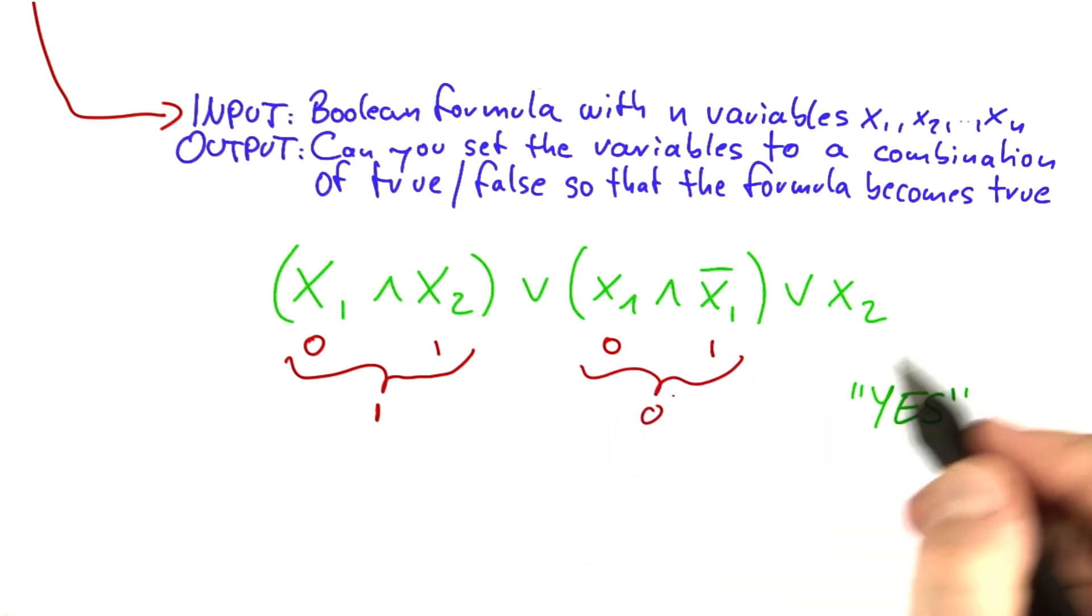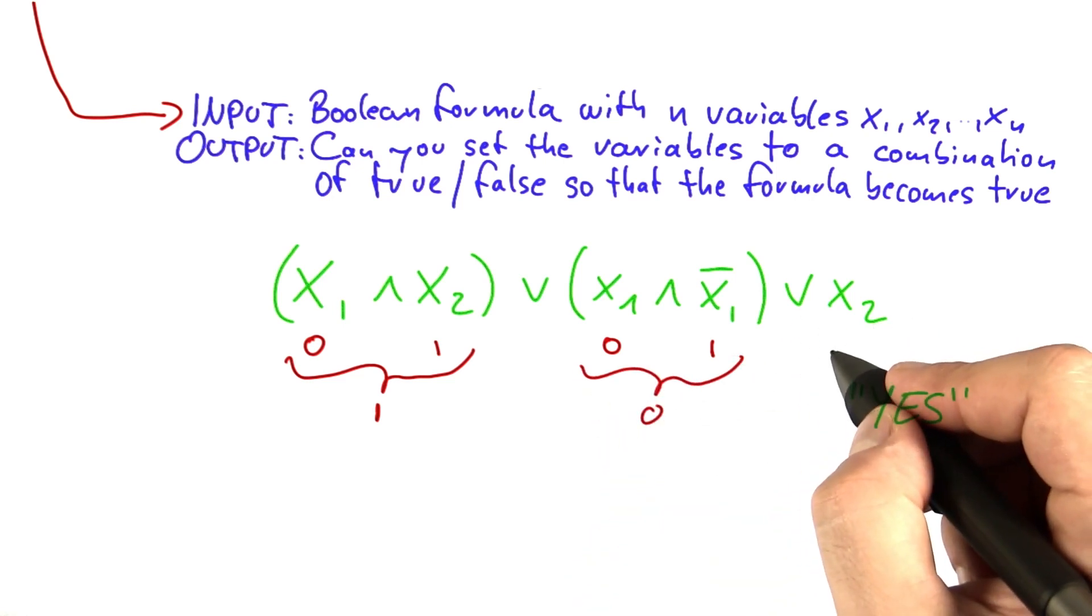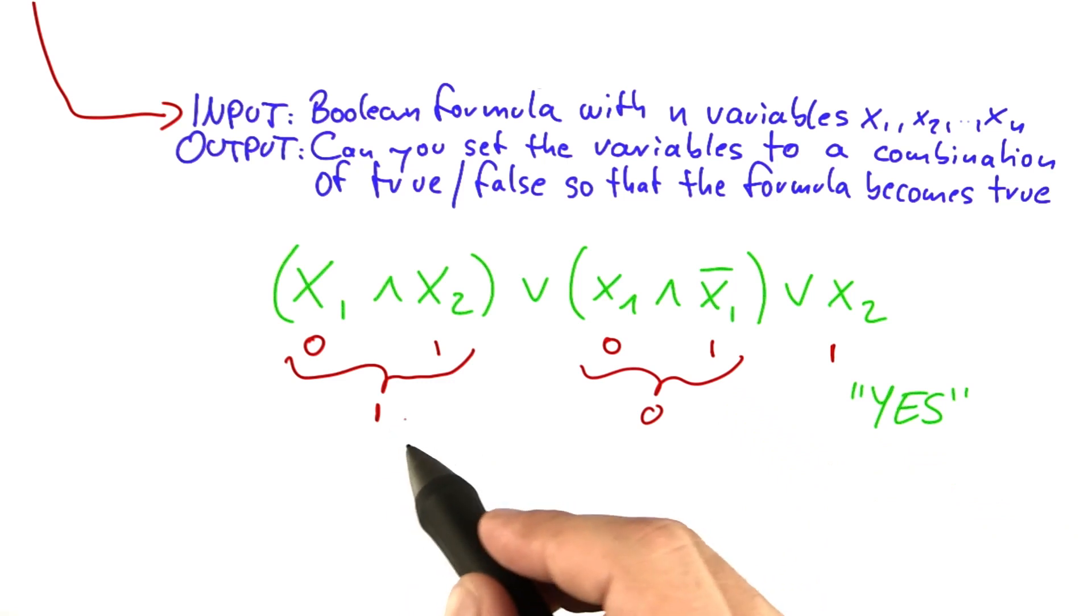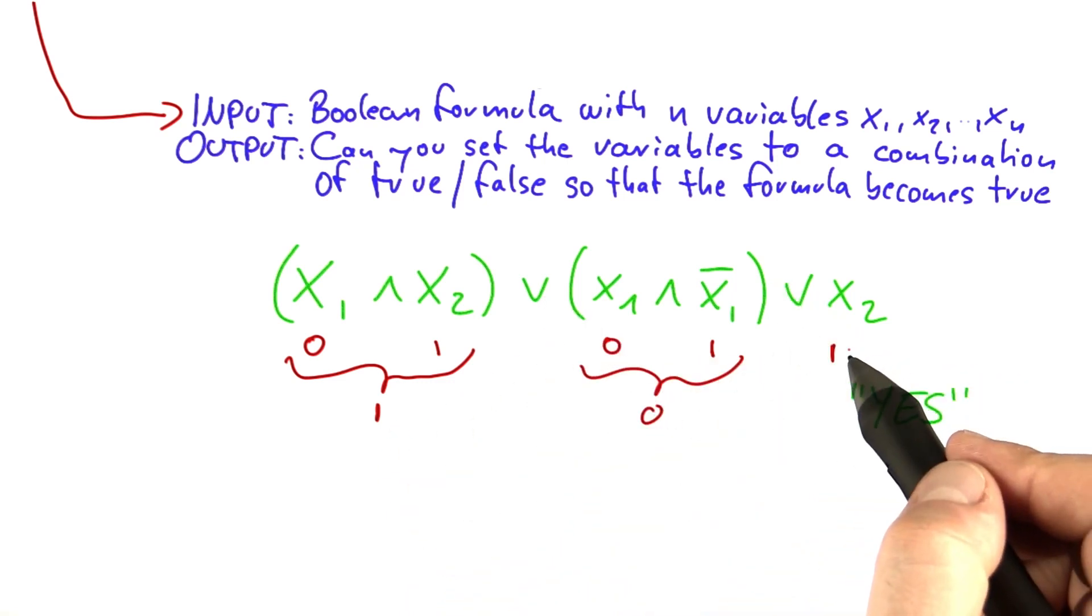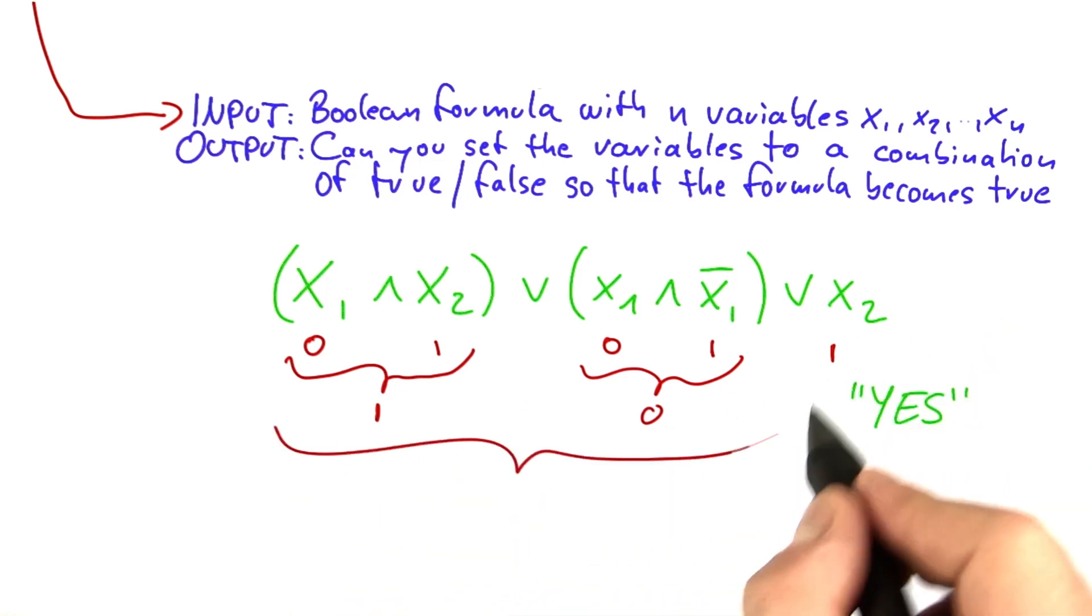And then let's set x2 to 1 because then this whole thing here is 1. This stays at 0 no matter what we do. And this 1 also goes to 1. And then you have 1 or 0 or 1. So there's at least 1 1 in here. And so the whole thing evaluates to 1. And the formula can be satisfied.